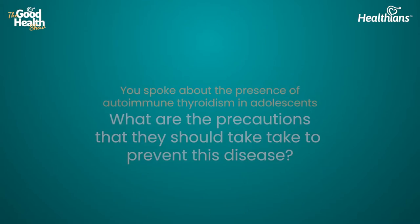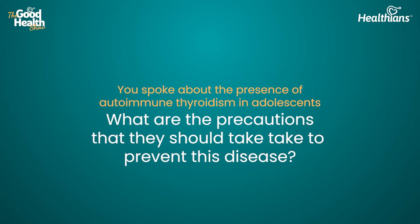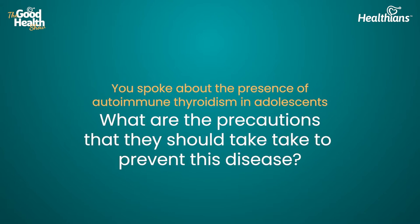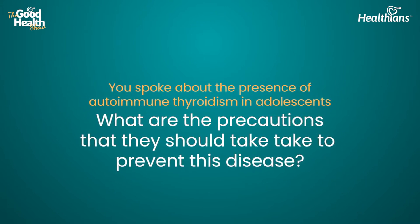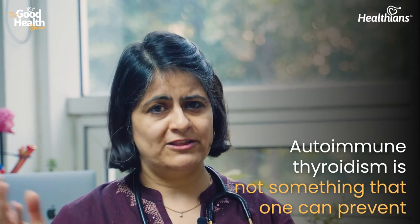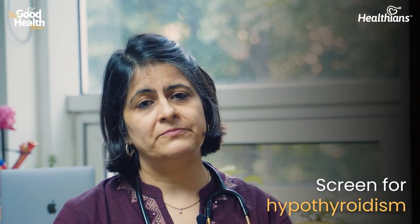The incidence of congenital hypothyroidism is reported as one in two thousand to four thousand in different populations, which is high enough to warrant screening. Autoimmune hypothyroidism is not something one can prevent if there is an increased risk — it may present later in life or also in the adolescent age group.